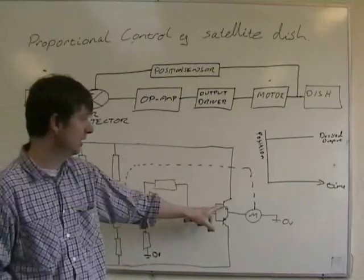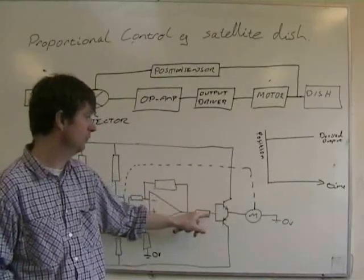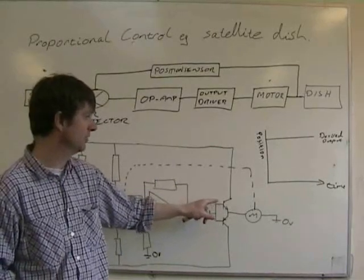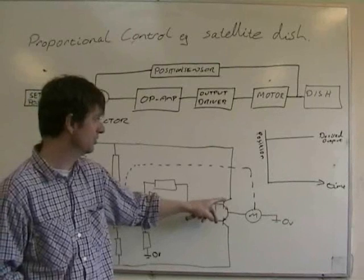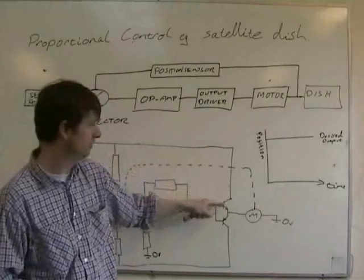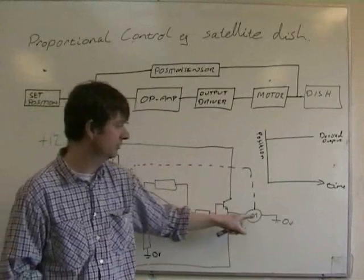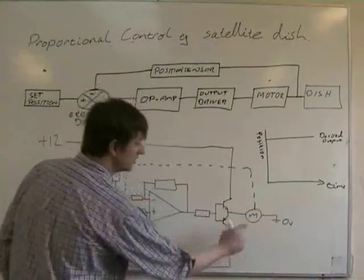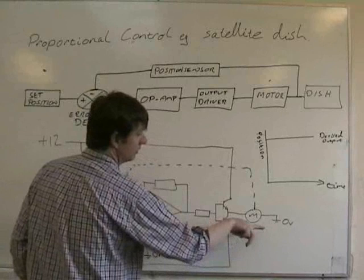When this transistor, the NPN one, when the voltage here gets to 0.7, this one switches on, and current will flow from plus 12 down through that transistor, through the motor, to zero. So the current is flowing that way through the motor.